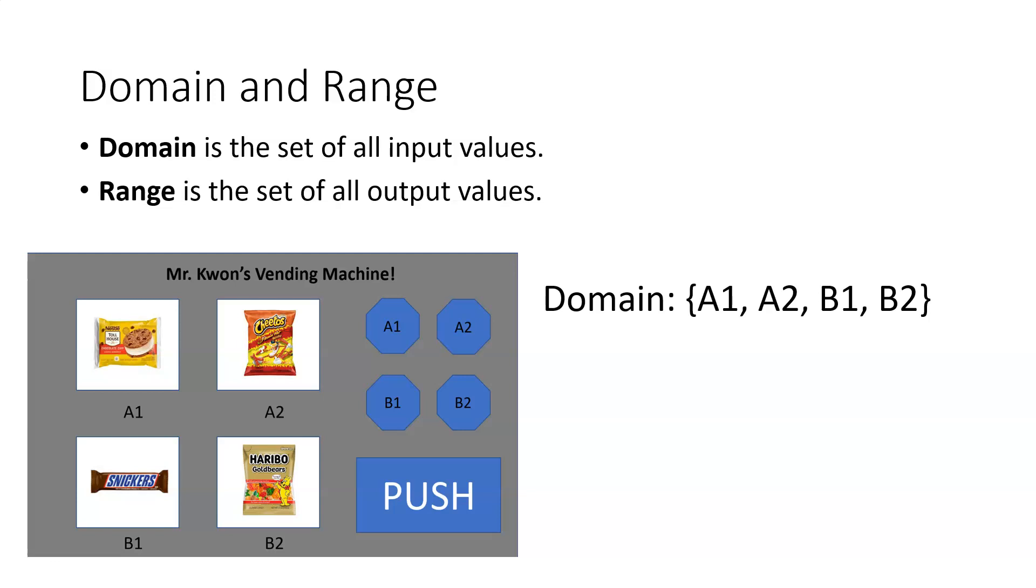And whenever you have a finite set of values in your domain, what we do is we list them out and separate them with commas, and place them between these sets of curly brackets.